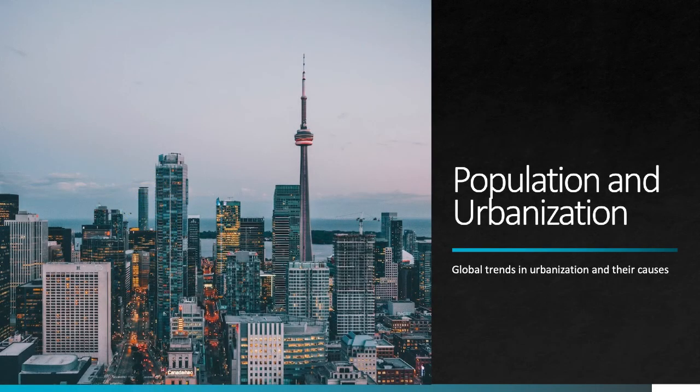In this video, we'll discuss global trends in urbanization and how they intersect with the growing population. When we talk about urbanization, we're talking about cities, but the precise definition of what is urban isn't that clear. This photo of Seattle, Washington clearly is an urban setting, and in most cases, the definition refers to any cities or towns of more than 5,000 people.